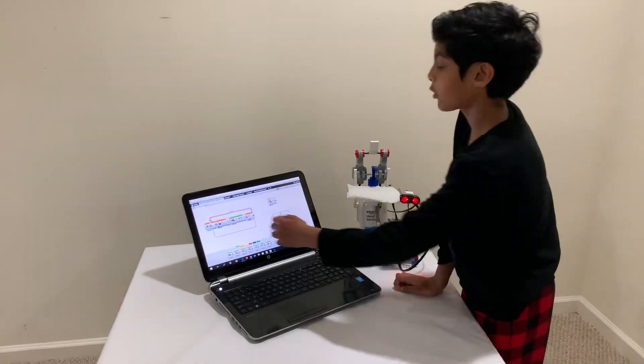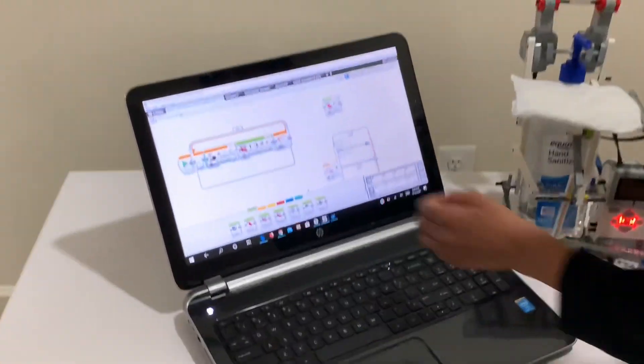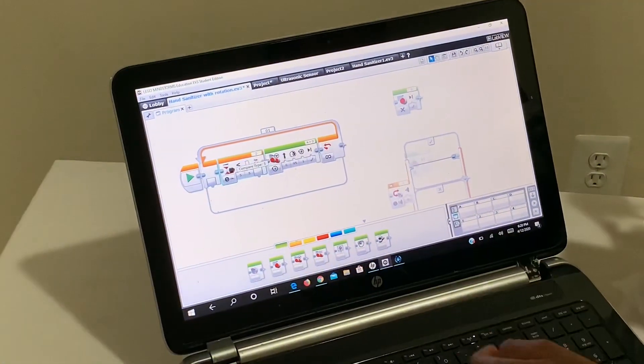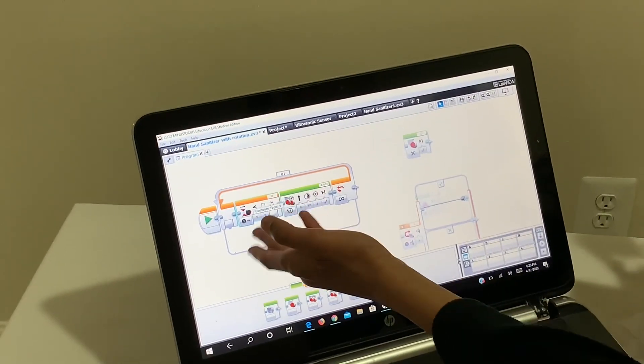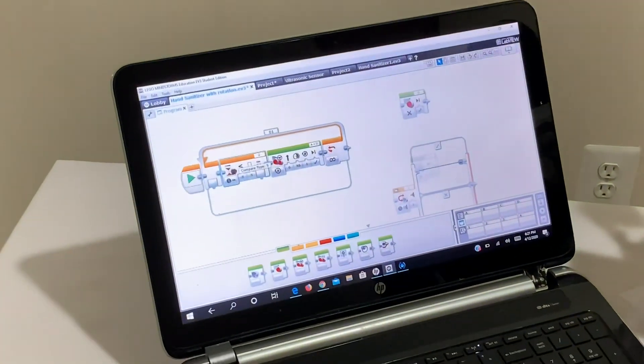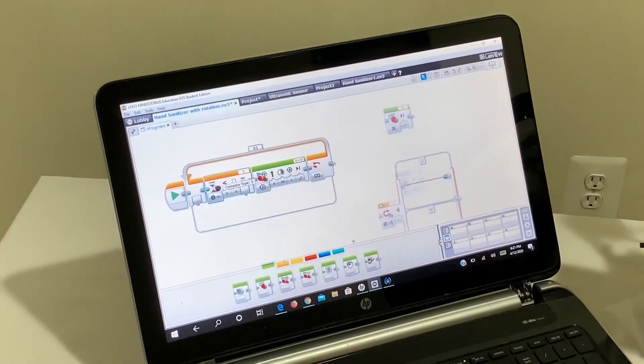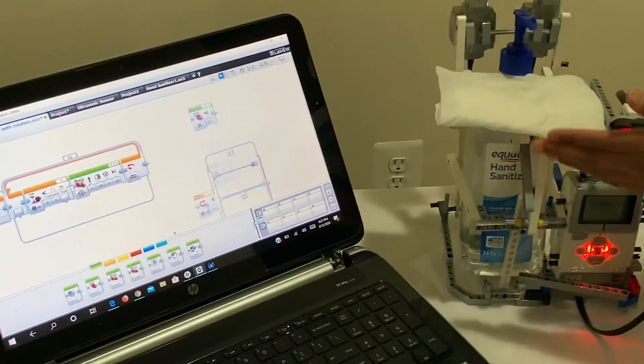This is my program. First I use the start block, then I use this repeat block, and this is a wait block. It's waiting for the ultrasonic sensor, and when it senses something it'll run it.